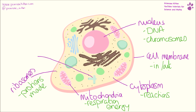This bit down here is the centriole. There are two of them and they separate out. When the cell divides by mitosis, these form the poles of the spindle — they form these bits here when the cell divides by mitosis. But they are always present in the cell.